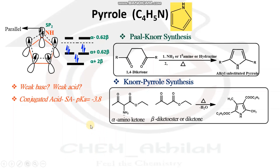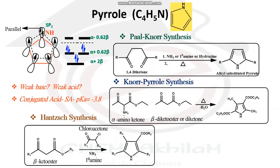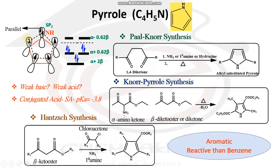Another method is Hantzsch synthesis. In Hantzsch synthesis, it is the condensation between chloroacetone, a beta-keto ester, and a primary amine to form a substituted pyrrole. These are the three main important named syntheses of pyrrole. Normally, Knorr pyrrole synthesis is the most commonly used.